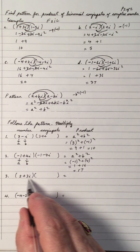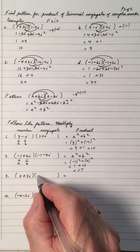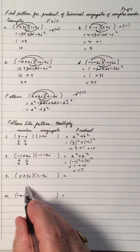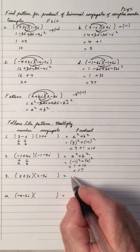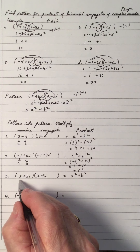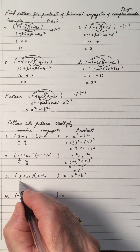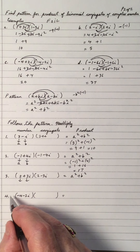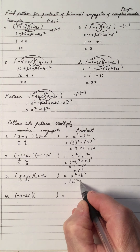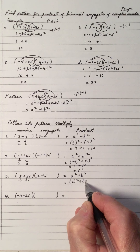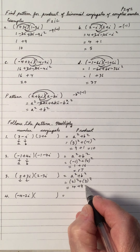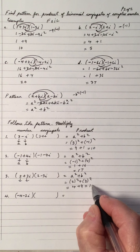If you want to work it out by FOIL, you would use 2 minus 3i and multiply it out. Or using the quick pattern, a squared plus b squared: a is 2 and b is 3, so 2 squared plus 3 squared gives 4 plus 9, which is 13.